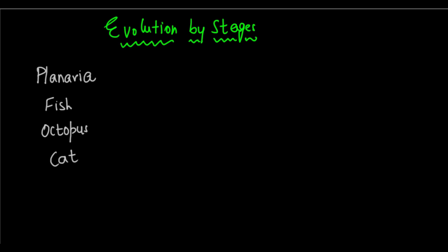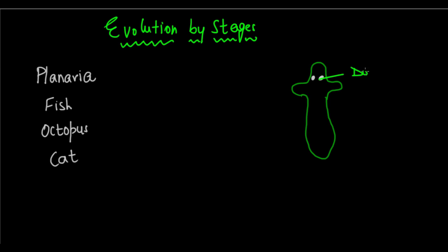If you look at planaria and try to draw its diagram and look at its eyes, you will see that its eyes are just dot-like structures. These so-called eyes are primitive — they are just dot-like primitive structures which are called spots.